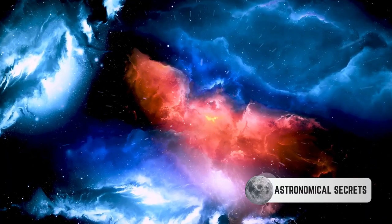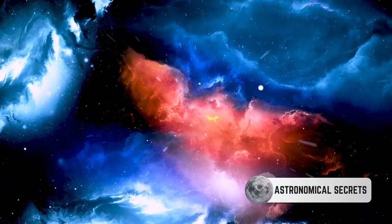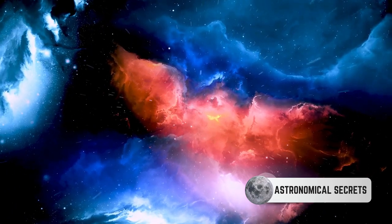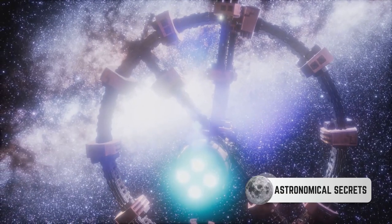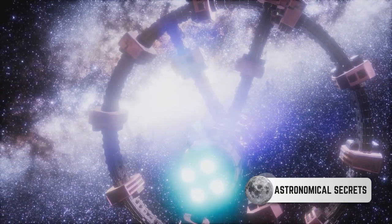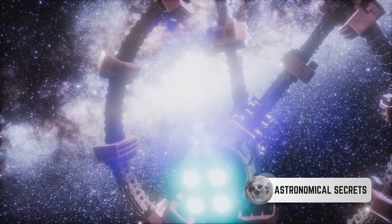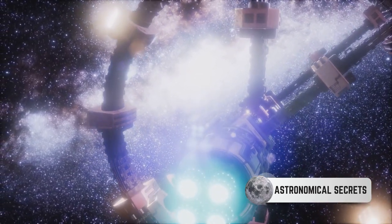Our own solar system, with its sun and orbiting planets, is nestled within one of these spiral arms, about halfway out from the center of the galaxy. We're located in what astronomers call the Orion Arm, a minor spiral arm sandwiched between two larger ones, the Perseus Arm and the Sagittarius Arm.